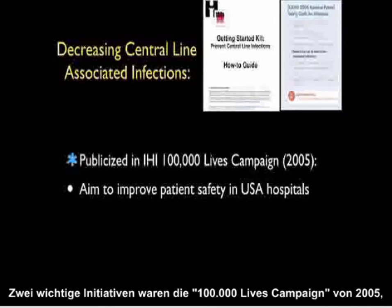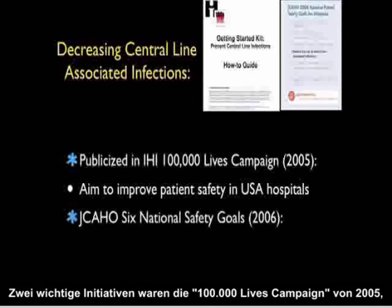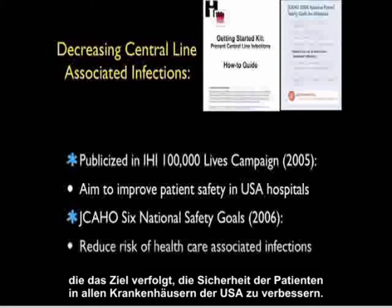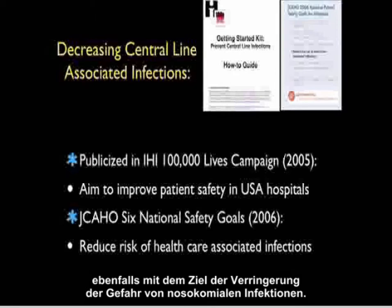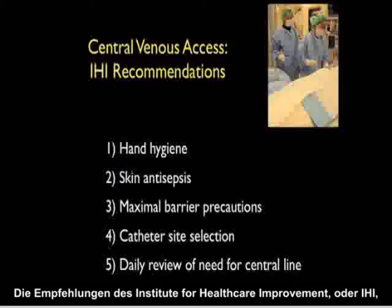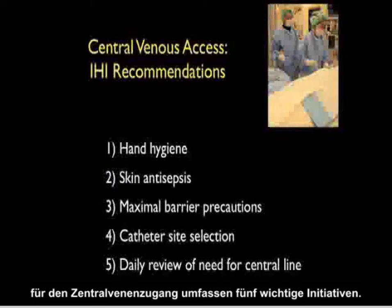Two major initiatives were the IHI 100,000 Lives campaign, which came out in 2005 with the aim to improve patient safety in all USA hospitals, and in 2006 the Joint Commission's JCO six national safety goals, also aimed at reducing healthcare-associated infections. The Institute for Healthcare Improvement (IHI) recommendations for central venous access include five major initiatives.